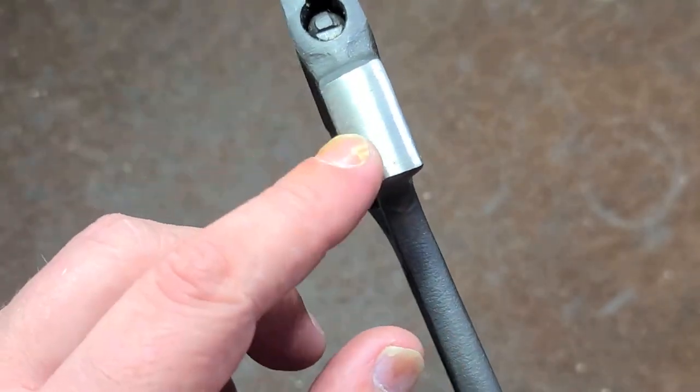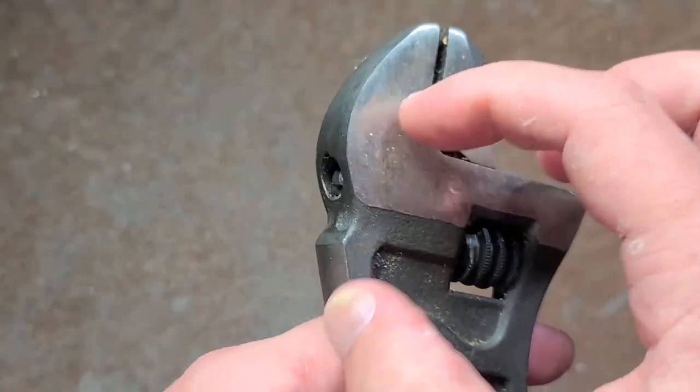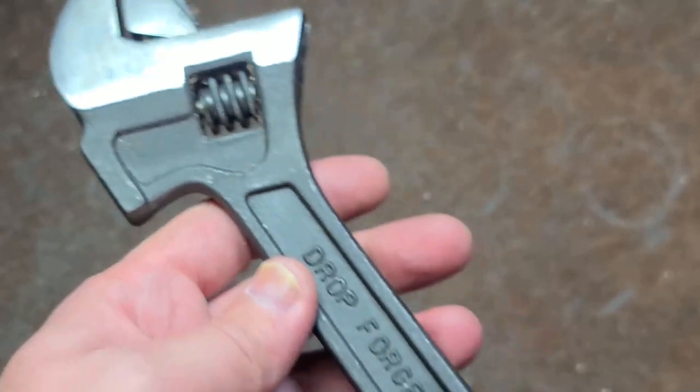It's called the Hammerhead because it has a striking surface on it. They do make adjustable wrenches like this.